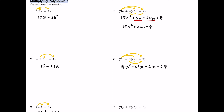Just like in number 5, we have four terms after multiplying, but the two middle terms can be combined. So we have 14x squared, and 63x take away 6x is positive 57x, then take away 27. That's our final expression.